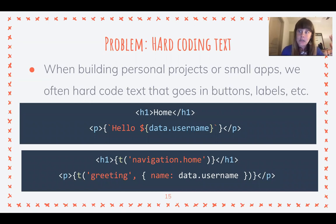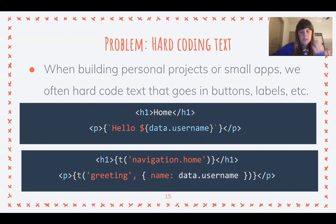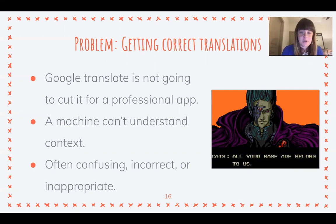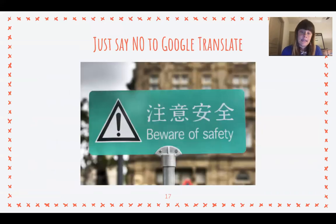What I mean by not hard-coding text is: having a function — say called 't' — that goes to a location and pulls out the text. Even if it's all English text at the moment, at least you have that stored so you can translate into different languages in the future. The next issue is getting correct translations. Google Translate is not going to cut it for a professional application because a machine cannot understand context — it often gives you confusing, incorrect, or inappropriate text.